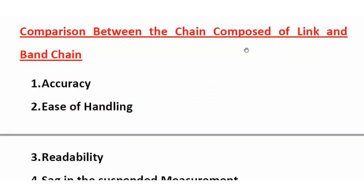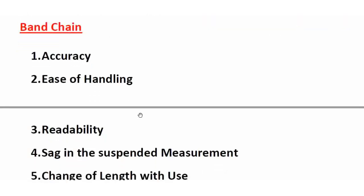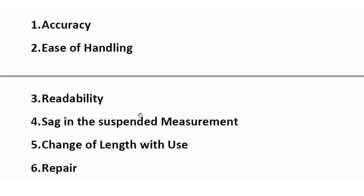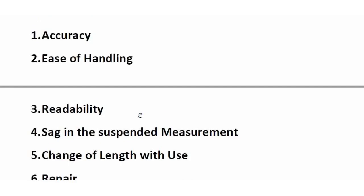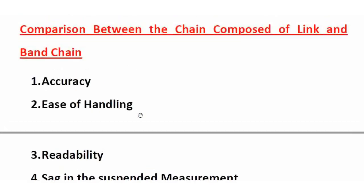Next is a comparison between a chain composed of links (normal metric chain) and a band chain. The comparison covers accuracy, ease of handling, readability, sag in suspended measurement, change of length with use, and frequency of repair.